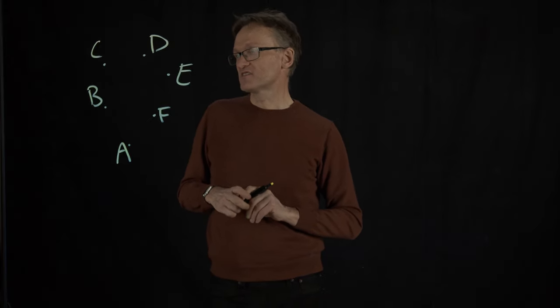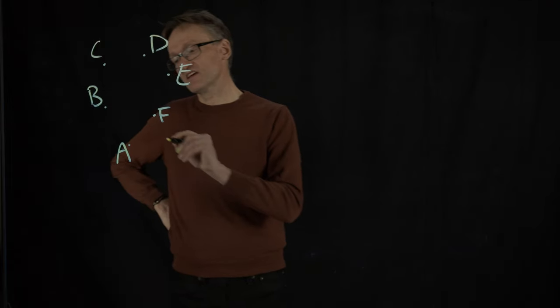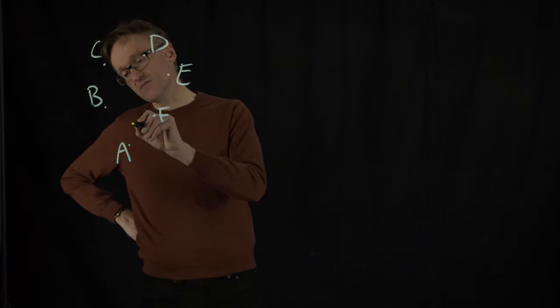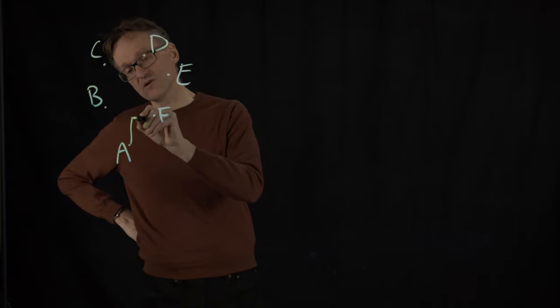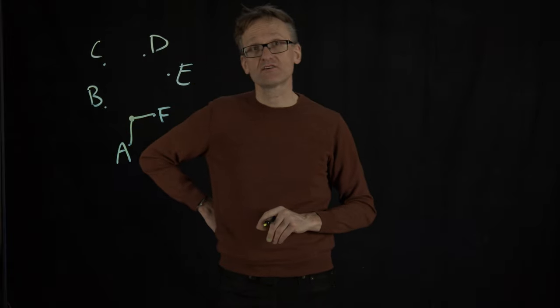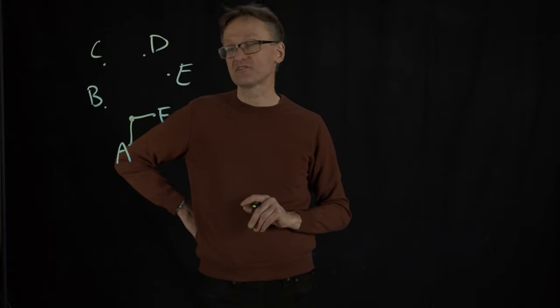And what we then try to do is find an algorithm that, let's assume that in this case, A and F were the ones that were closest. Maybe I can design them that I say, A and F were the closest, so I'll join those, and then I'll create a new A, F dot there.